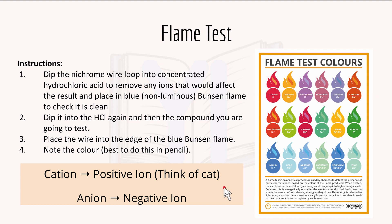The difference between cation and anion is that a cation is a positive ion and an anion is a negative ion. Think of cation like a cat - a cat is always happy, so it's a positive ion. And anion is a negative ion.